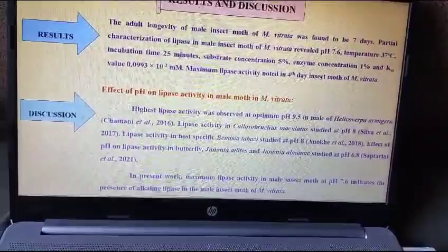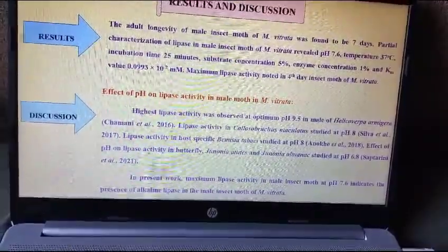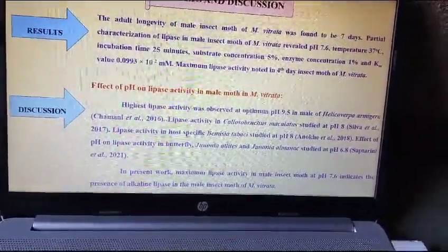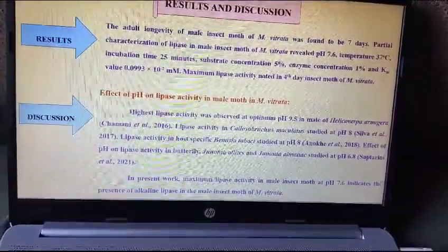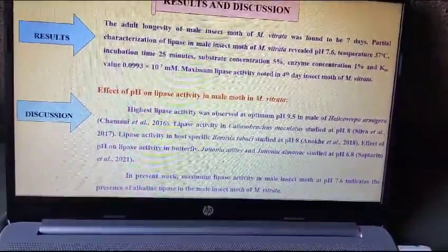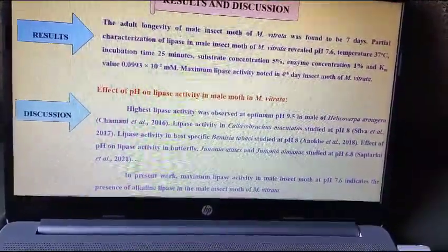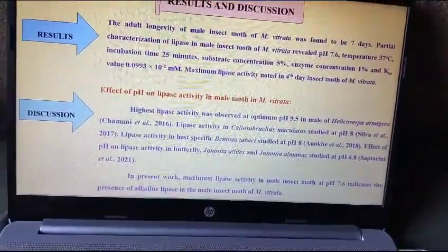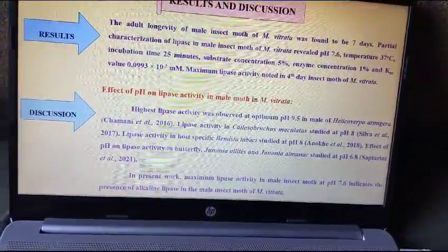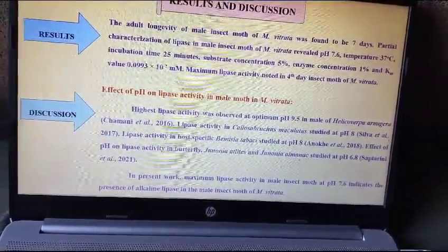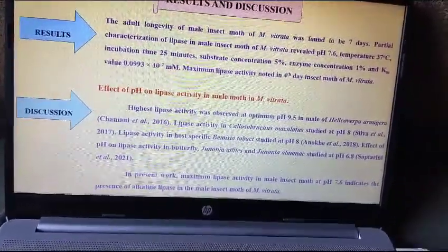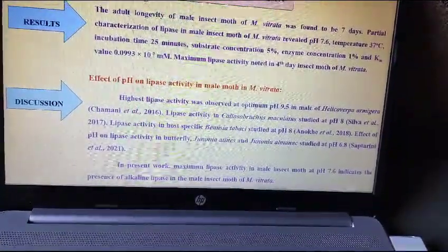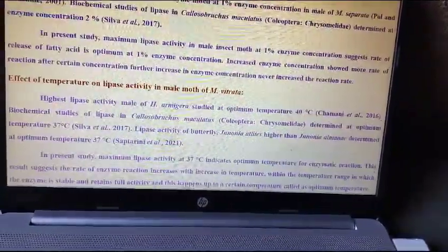Discussion. The effect of pH on lipase activity in male moth of Maruka Vitrata: highest lipase activity was observed at optimum pH 9.5 in male Helicoverpa armigera. In the present work, maximum lipase activity in male insect moth at pH 7.6 indicates the presence of alkaline lipase in the male insect moth of Maruka Vitrata.